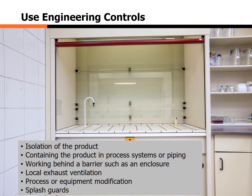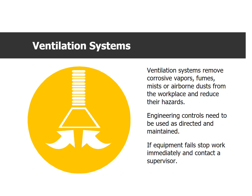Use the engineering controls prescribed for your workplace. This can include isolation of the product, containing the product in process systems or piping, working behind a barrier such as an enclosure, local exhaust ventilation, process or equipment modification, and splash guards. Ventilation systems remove corrosive vapors, fumes, mists, or airborne dusts from the workplace and reduce their hazards. Engineering controls need to be used as directed and maintained.